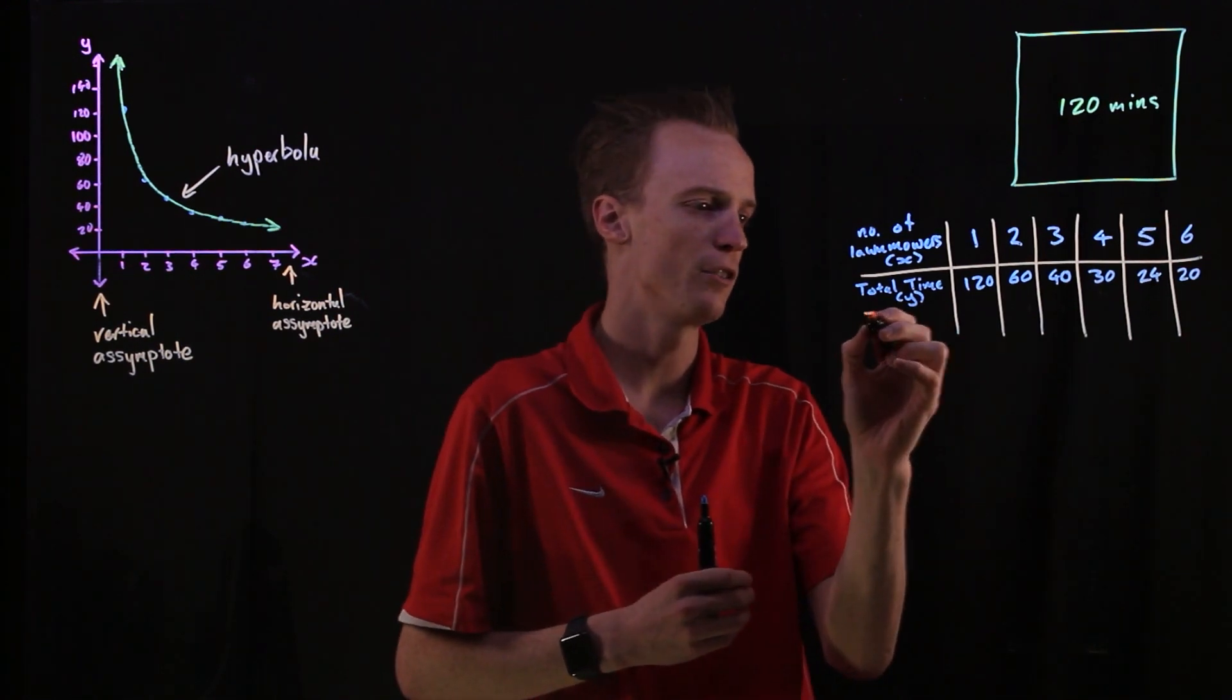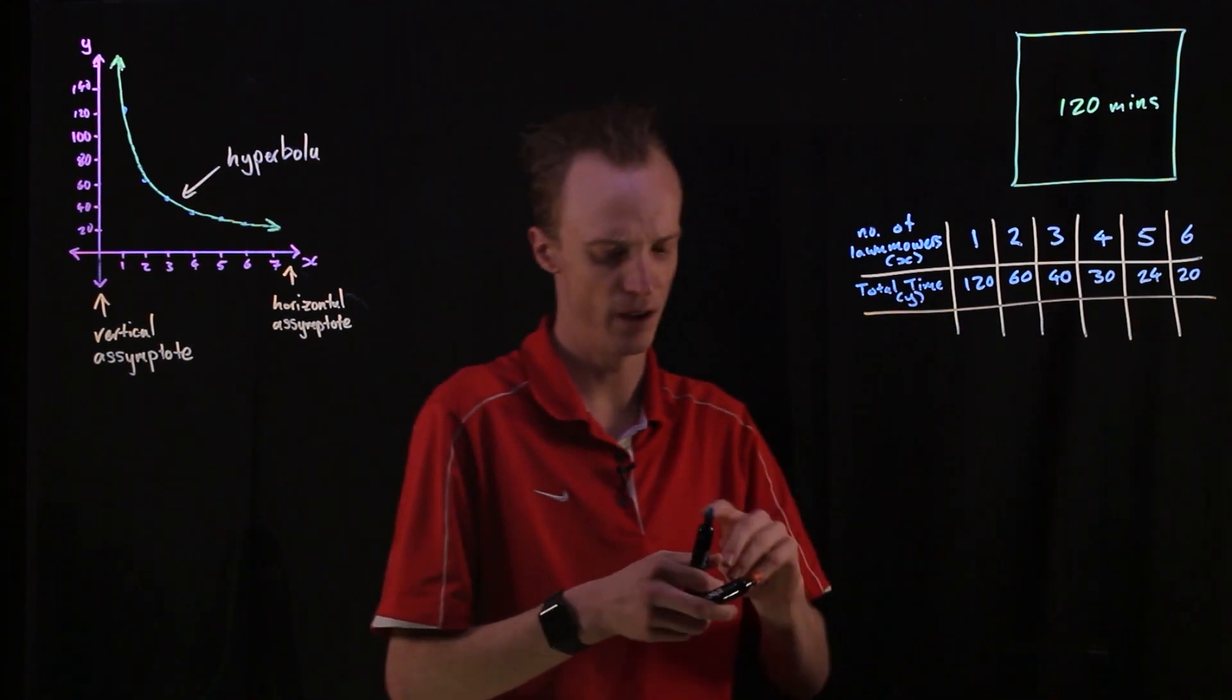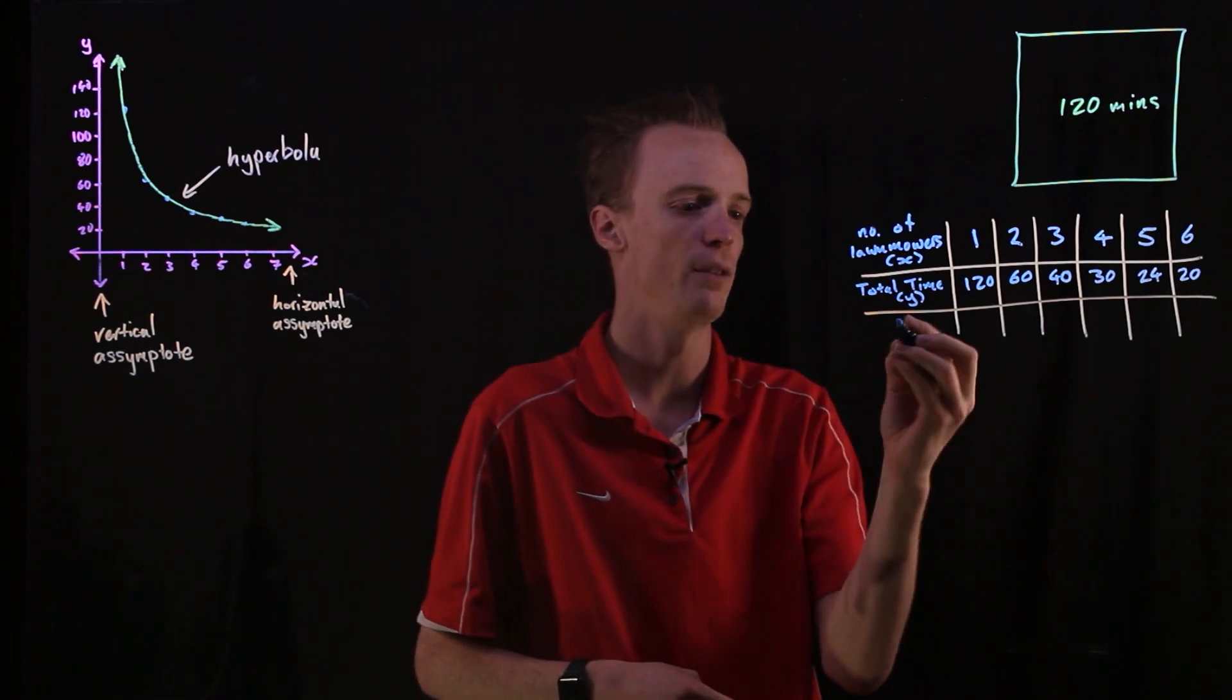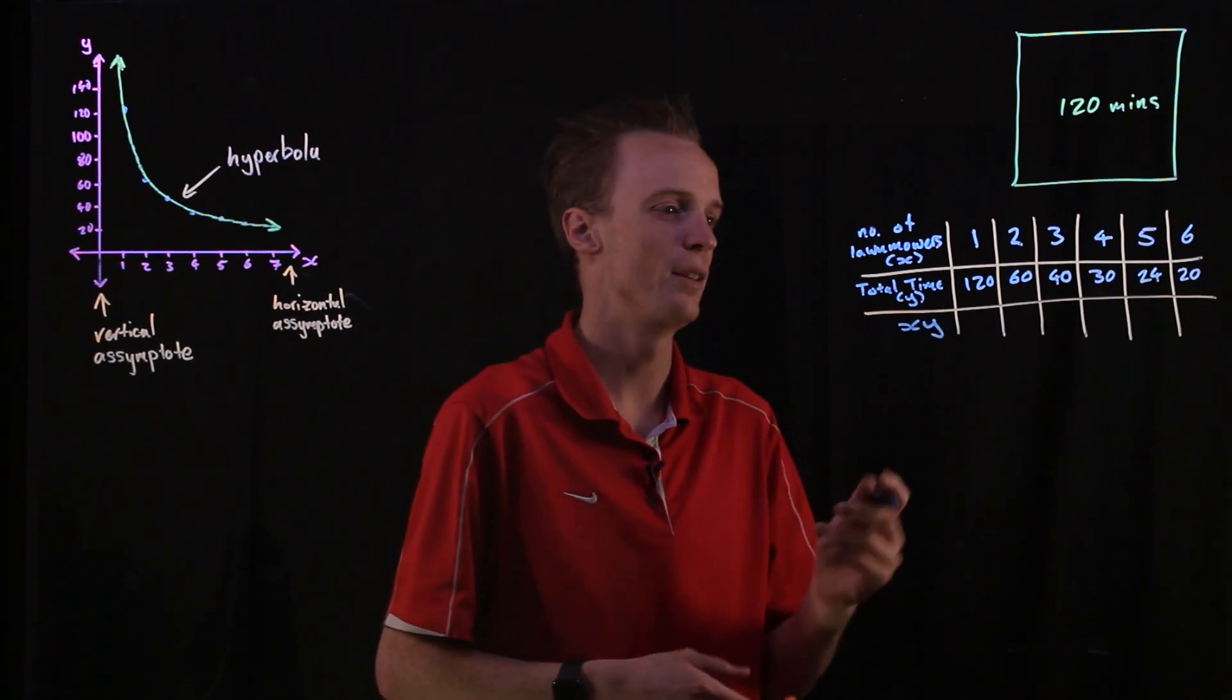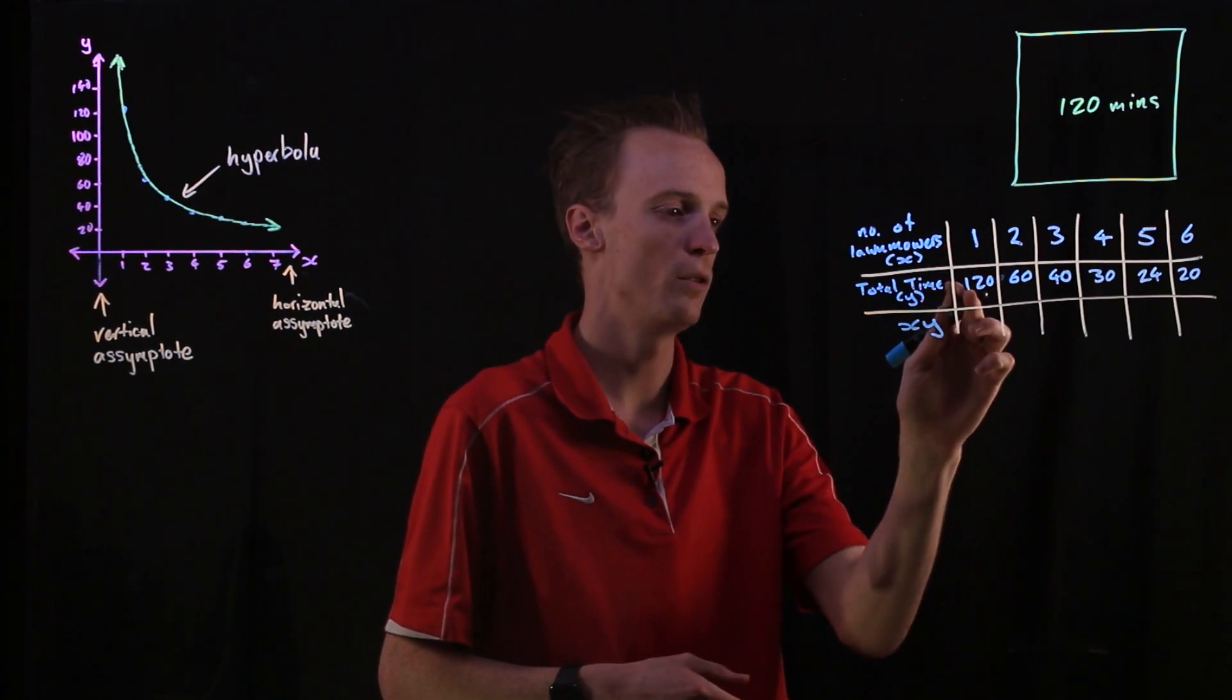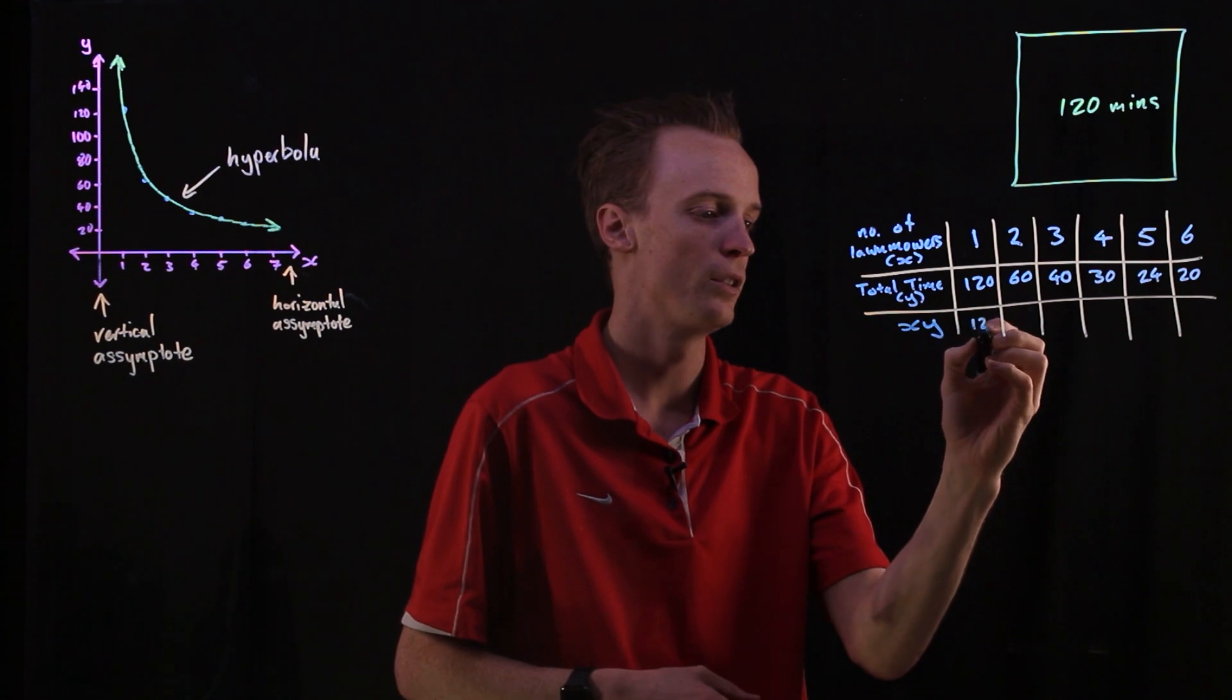What I'm actually going to do here is I'm going to create a new row here. And I'm going to look at what happens if I multiply my x and my y variable together each time. Now when I do this, I've got 1 multiplied by 120, which is going to be 120.